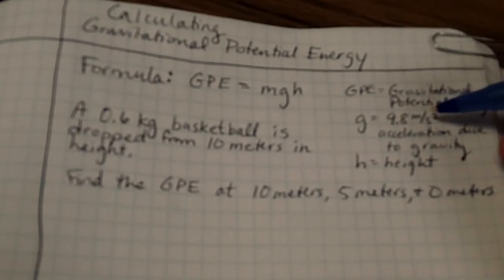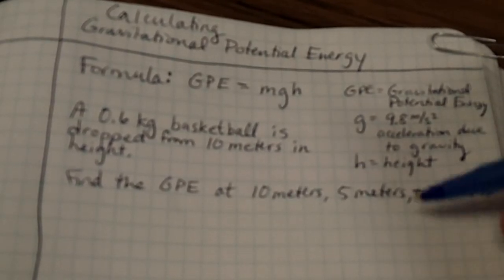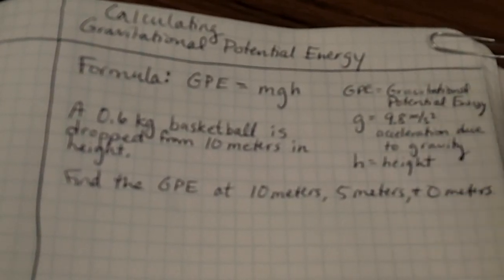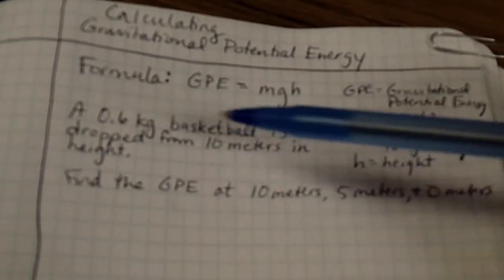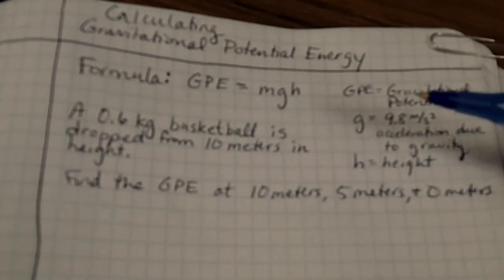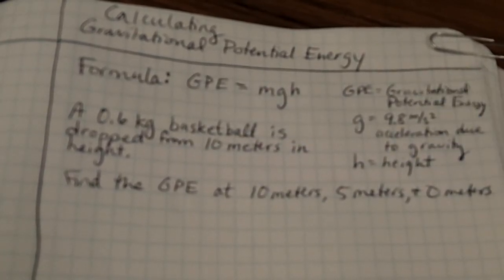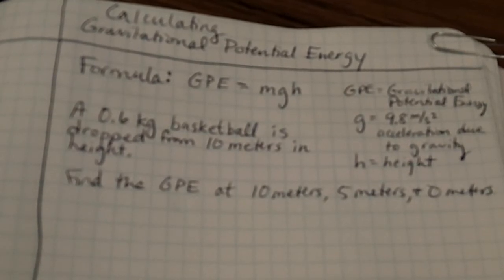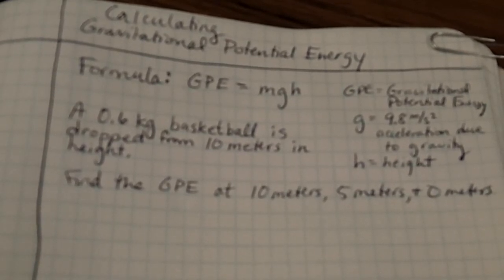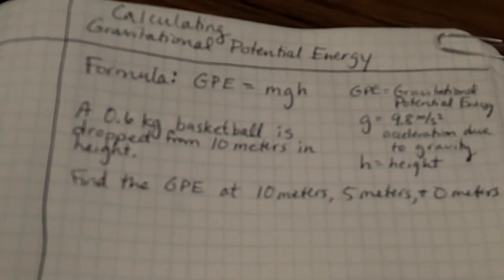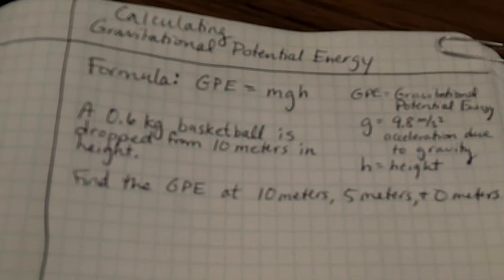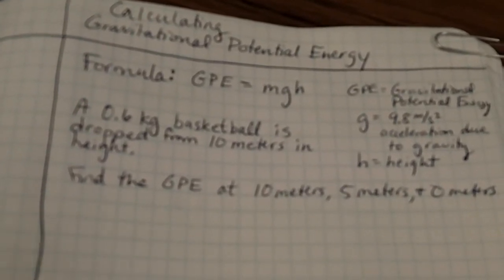Just take my word on it. It's a little bit strange we've got this meters per second squared for our units. For the H we have a height and of course our units are going to be meters in that case. So let's look at an example. We have a basketball. It has a mass of 0.6 kilograms and it's dropped from 10 meters in height. What we want to do is find the GPE at 10 meters, 5 meters and 0 meters.